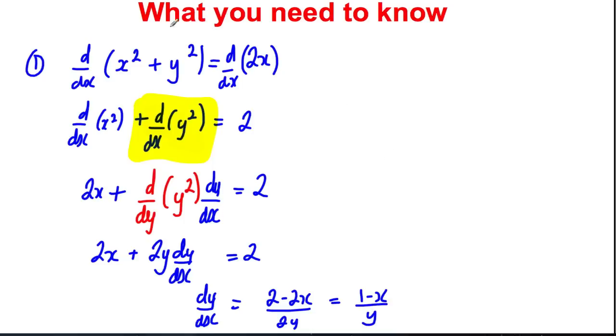So that's the first type you need to know, dy by dx of x squared plus y squared. The next type you need to know might be ever so slightly more complicated, example 2.